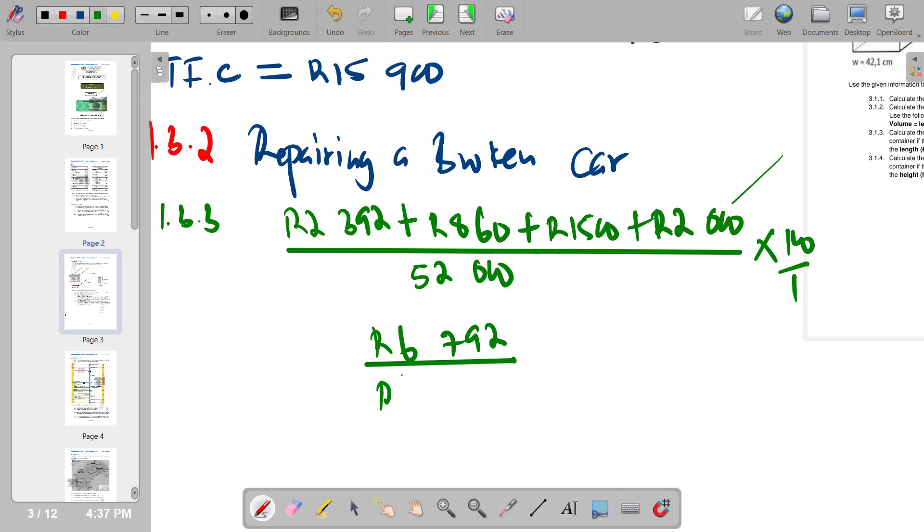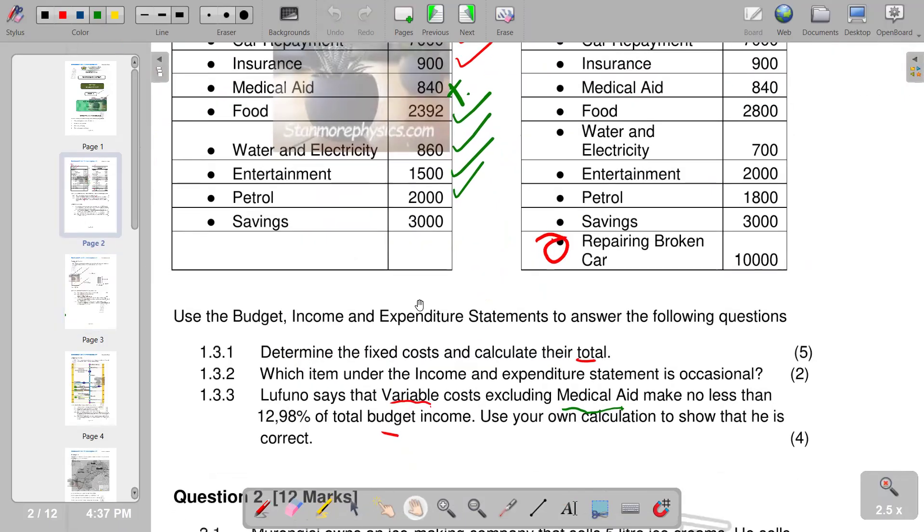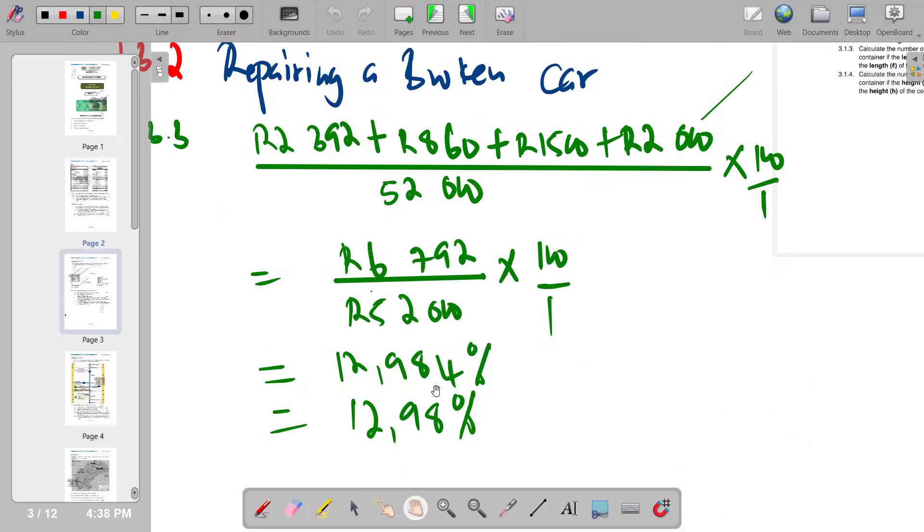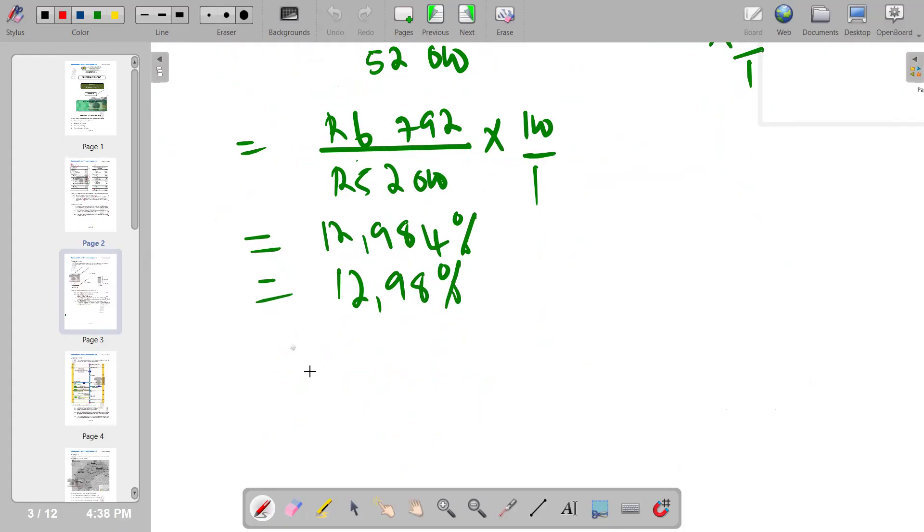When you divide by 52,000 and multiply by 100 to convert to a percentage, you see that the total percentage you get is 4.984, which you round off to two decimal places to become 4.98 percent. The question says it will make no less than 4.98 percent, which means Lufuno is correct. The answer we got was 4.984, which is more than 4.98 percent. Our conclusion: Lufuno is correct.